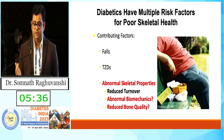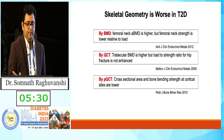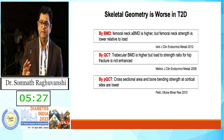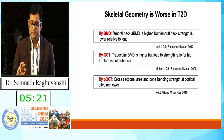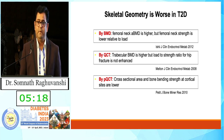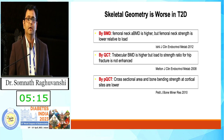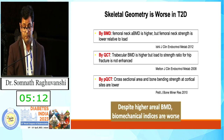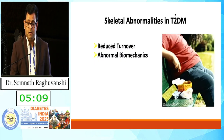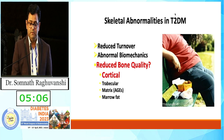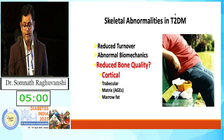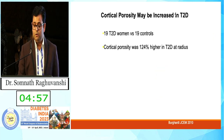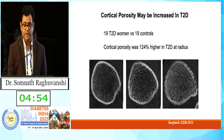We have seen reduced bone turnover in type 2 diabetes. What about biomechanics by BMD or CT scan or peripheral CT? The strength of bone, particularly at the hip joint, is reduced in type 2 diabetes. Strength ratio at the hip is reduced in type 2 diabetes despite higher BMD by different methodology. Regarding cortex: cortical porosity is increased by 124% in patients with type 2 diabetes.